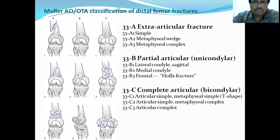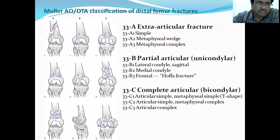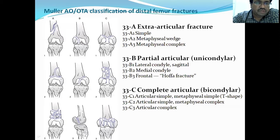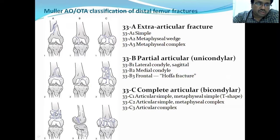The AO-Müller classification of distal femur fractures: Type A is extra-articular, with A1 simple, A2 moderate, and A3 severe comminution. Type B is partial articular — only one articular surface involved. Type C is complete articular — both condyles are involved — and is classified C1, C2, C3 based on severity of comminution.